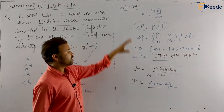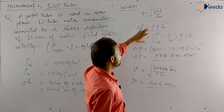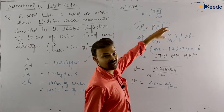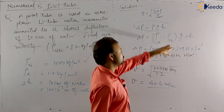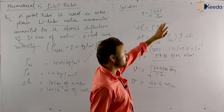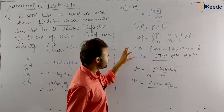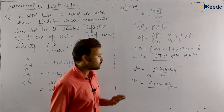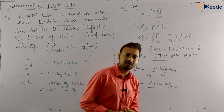Your homework is to verify the answer using the approximation, where you use only ρ_w × g × Δx, meaning you neglect the density of air. So delta P will be 1000 × 9.8 × 10⁻¹. Put this delta P value into the formula and calculate V. See what answer you get, compare it with 40.4 m/s, and calculate the error. Thank you.